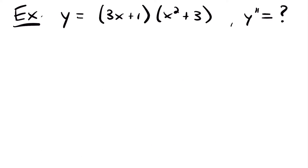Let's look at another example. Here we have the function y equals 3x plus 1 times the quantity x squared plus 3, and we want to know the second derivative of this function. This is going to bring in our product rule of derivatives, because we have two functions being multiplied together. The easiest way to go about this is to use the product rule. In order to find our second derivative, we first need to find the first derivative.